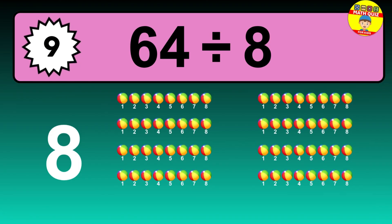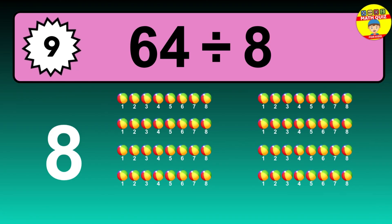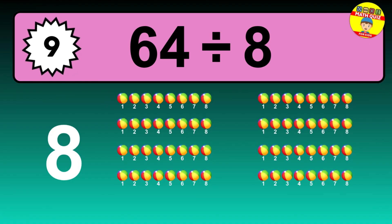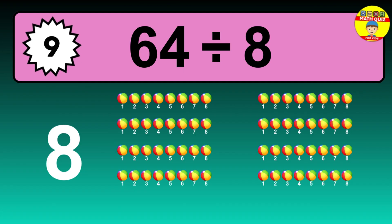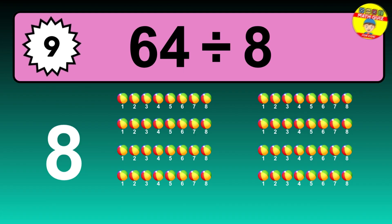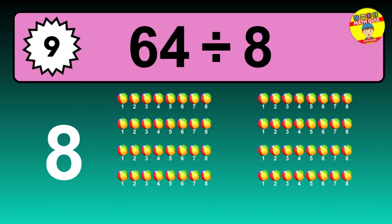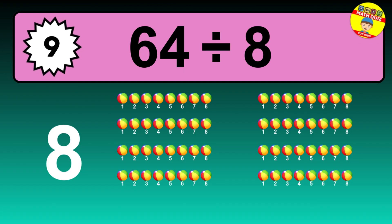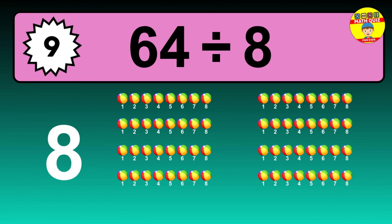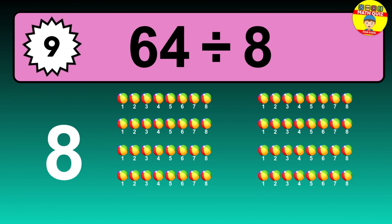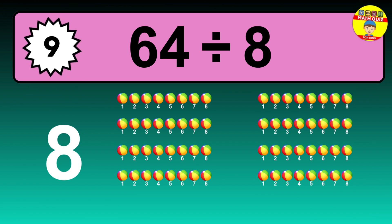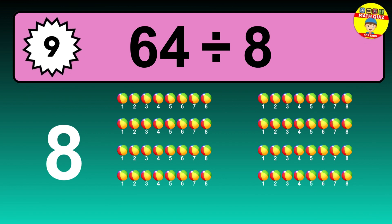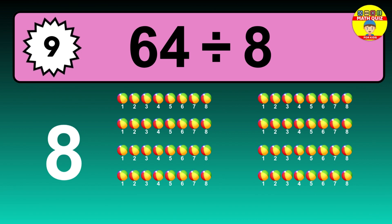Let's go to the solution. Divide the number 64 by 8. Each group contains 8 units, so dividing 64 by 8 results in 8 equal groups. Thus, the result is 64 divided by 8 equals 8.